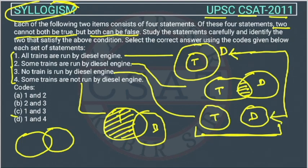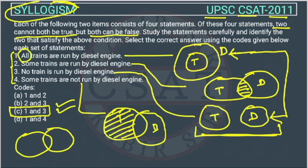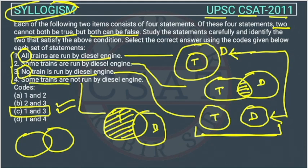The answer is the first and third statements — option C is correct. In these kinds of questions, you can directly mark first and third because the first statement uses 'all' and the third uses 'no,' so they cannot both be true but can be false together. Note that for 'some' statements, the false of 'some trains are run by diesel' becomes 'some trains are not run by diesel,' so those two can actually both be true at the same time. Hence, the answer is option C.